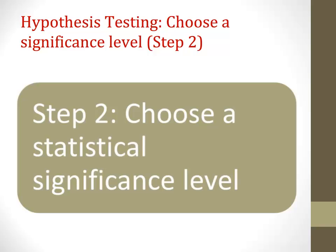So what is this alpha level, this significance level? It's the chance of making a type 1 error, or the probability of rejecting the null hypothesis when it's actually true. If we set the significance level at 0.05, this means we're willing to accept no more than a 5% chance that we're wrong. If we set it at 0.01, we're willing to accept no more than a 1% chance that we're wrong.